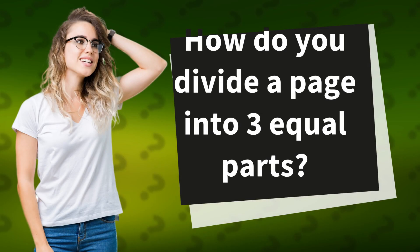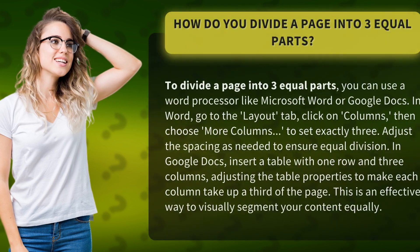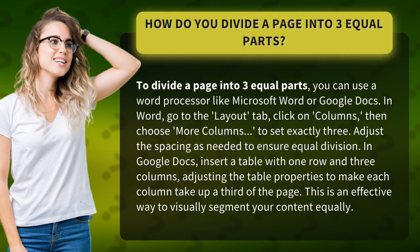How do you divide a page into three equal parts? To divide a page into three equal parts, you can use a word processor like Microsoft Word or Google Docs. In Word, go to the Layout tab, click on Columns, then choose More Columns to set exactly three. Adjust the spacing as needed to ensure equal division.